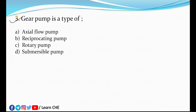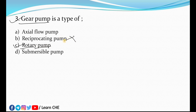The third question is: a gear pump is a type of? Pumps are classified as positive displacement pumps and rotodynamic pumps. In positive displacement pumps, there are two types: reciprocating pumps and rotary pumps. Rotary pumps include vane pumps, gear pumps, and screw pumps. So the answer is rotary pump. Gear pumps are used to develop high pressure, and the answer is rotary pump.